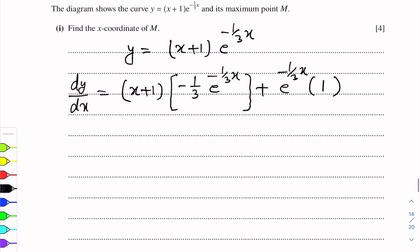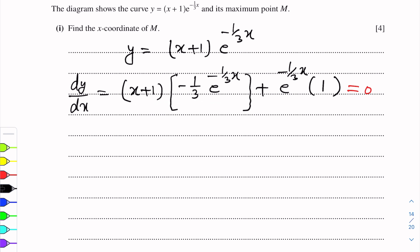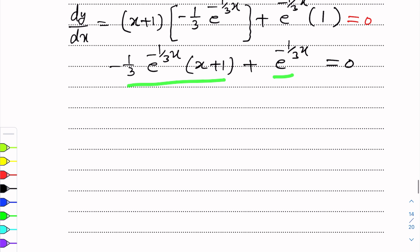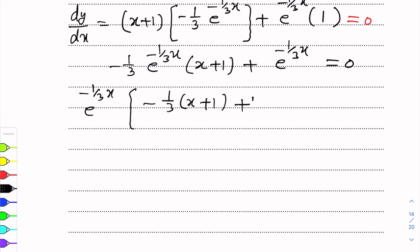We simplify this and the gradient value is 0, so we put dy/dx = 0. Rearranging: minus (1/3)·e^(-1/3 x)·(x+1) plus e^(-1/3 x) equals 0. Here e^(-1/3 x) is common in both terms. Taking it common: e^(-1/3 x) · [(-1/3)(x+1) + 1] = 0.